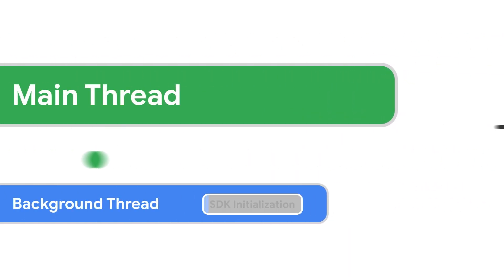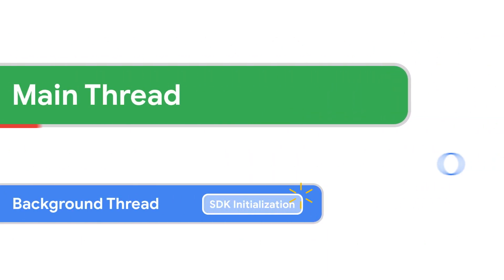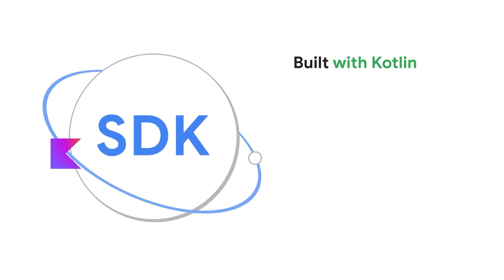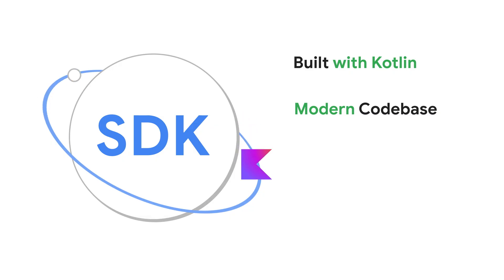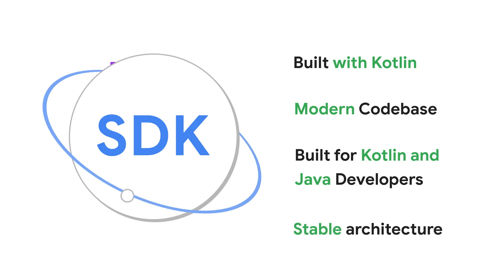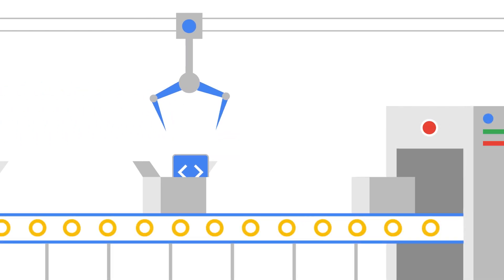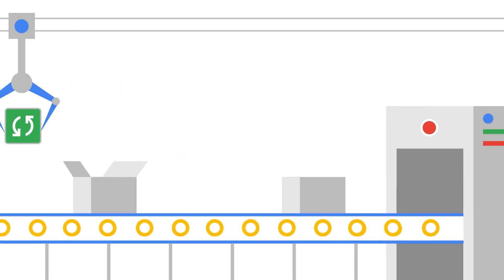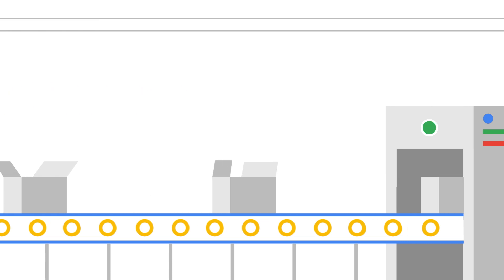We've also implemented background initialization to make things incredibly smooth. The new SDK is built with Kotlin, offering a robust and modern code base and provides idiomatic APIs for both Kotlin and Java developers to achieve more. We also have more stable architecture for better performance monitoring. And for you developers, we'll be releasing new versions every single month, meaning faster access to new features and quicker bug fixes.